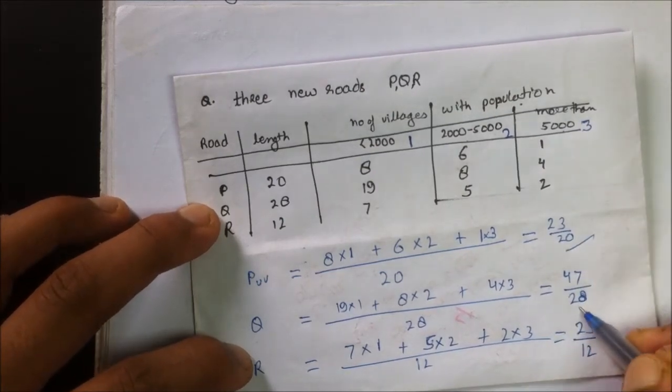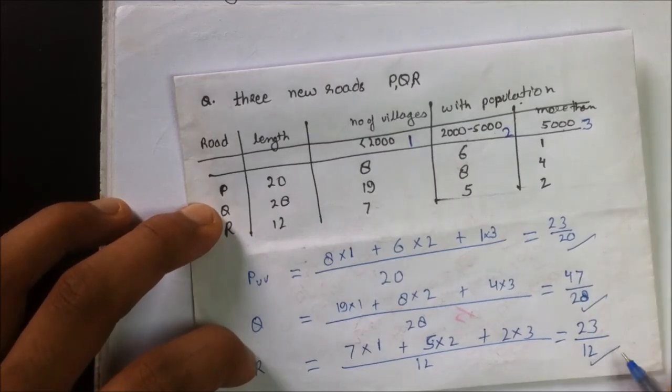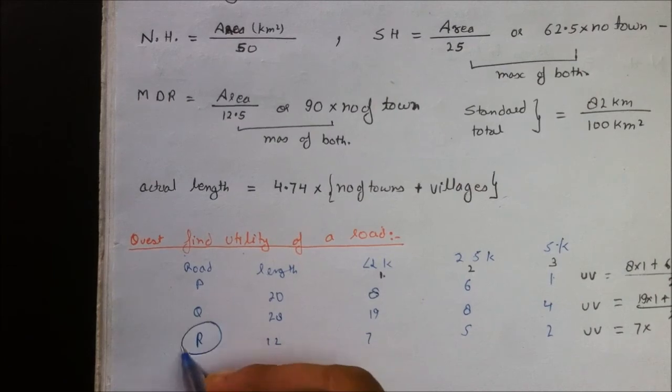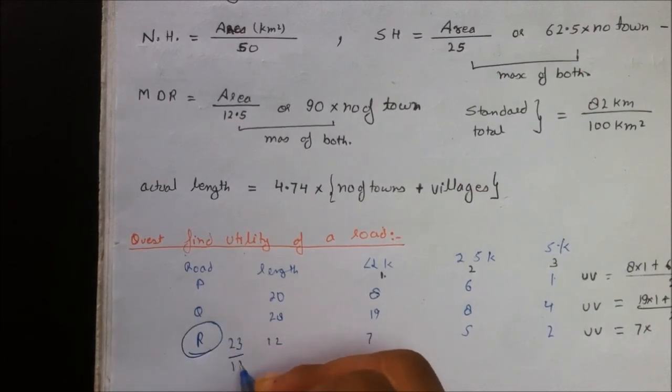So here are the utility numbers: 23 by 20, 47 by 28, and 23 by 12. The highest utility number is of road R, which is 23 by 12.